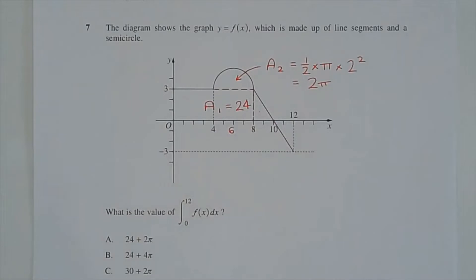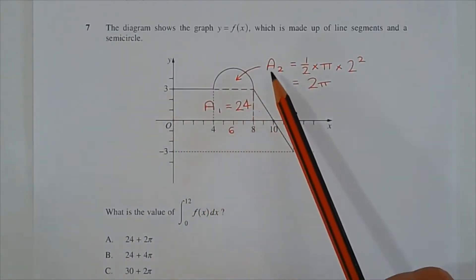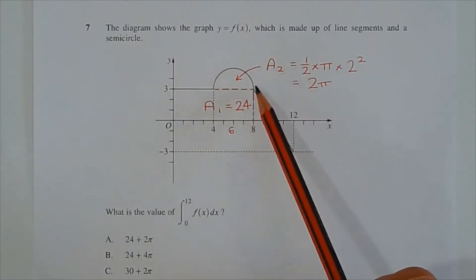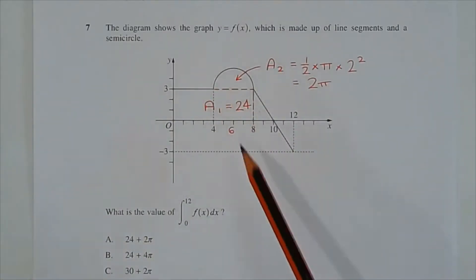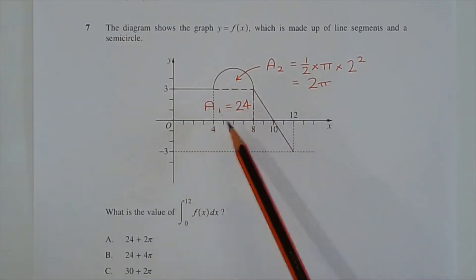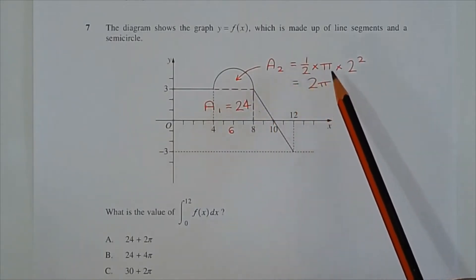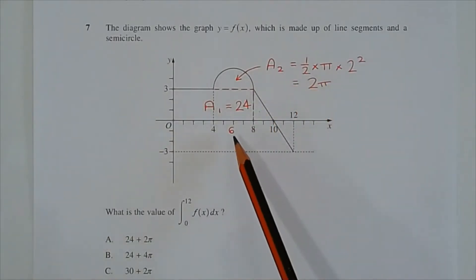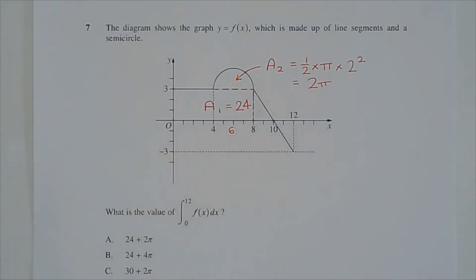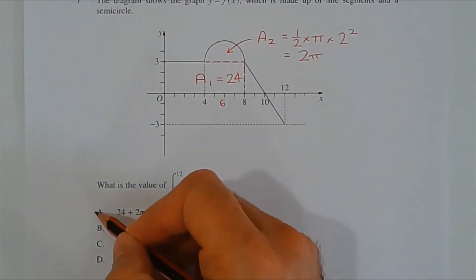So there are only two regions to consider: region A1, which is a rectangle, and region A2, which is a semicircle. Region A1 is 8 times 3, which equals 24. Region A2, the area of a semicircle, is half pi r squared. That's half times pi times 2 squared — the radius here is 2 units — which equals 2 pi. So the answer is option A: 24 plus 2 pi.